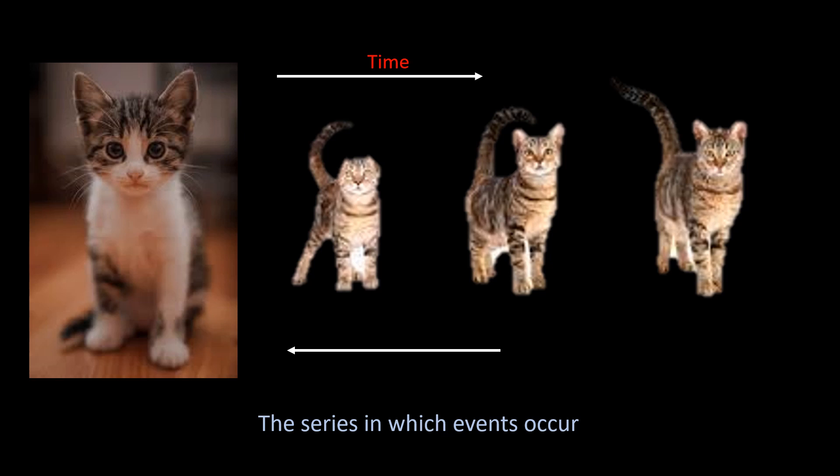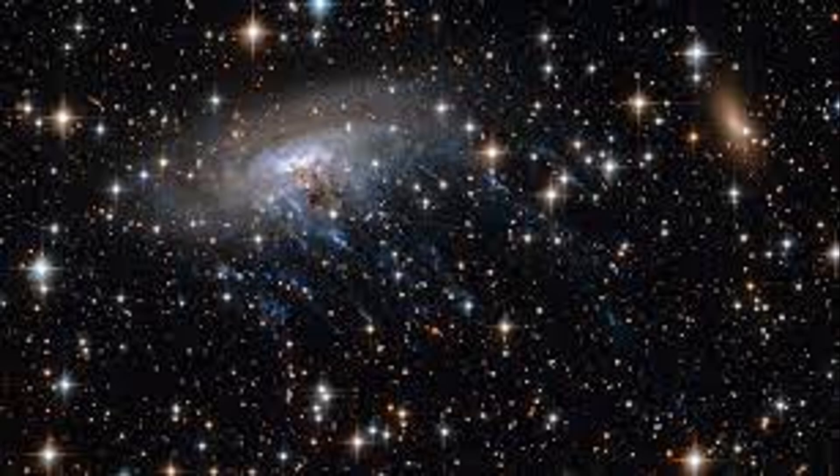This tells you that you can only use time to tell you the series in which events occur. This whole discussion has been very abstract. Let's now use real examples. Let us use a galaxy to clarify this. Note that this will work the same for any other kind of system.